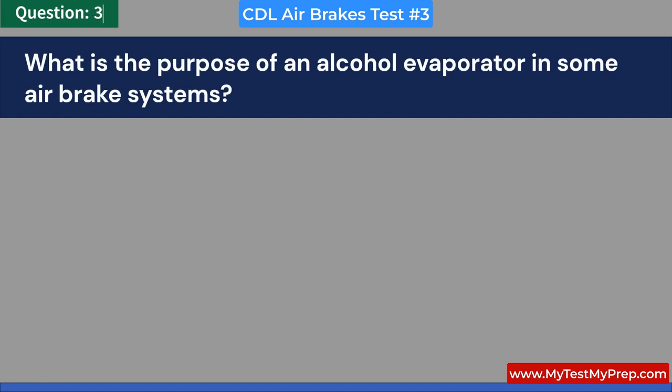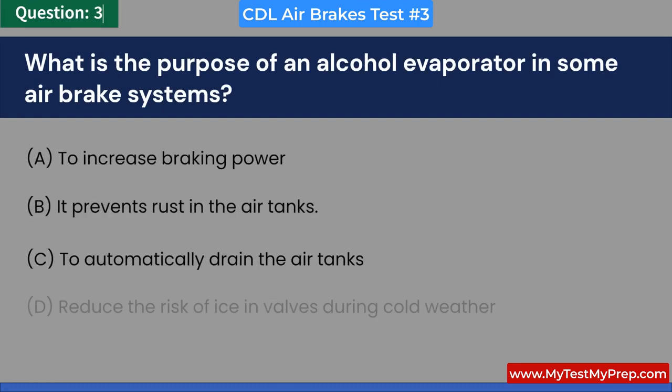What is the purpose of an alcohol evaporator in some air brake systems? A. To increase braking power. B. It prevents rust in the air tanks. C. To automatically drain the air tanks. D. Reduce the risk of ice in valves during cold weather. Answer: D. Reduce the risk of ice in valves during cold weather.